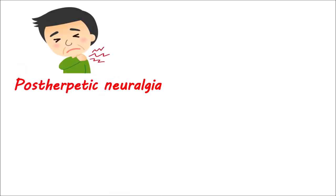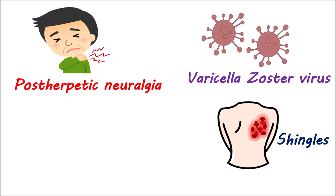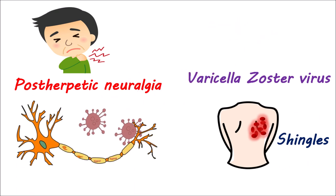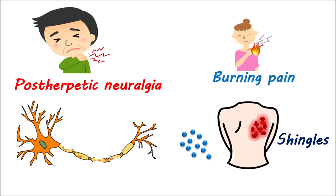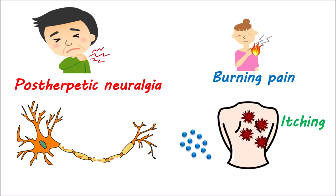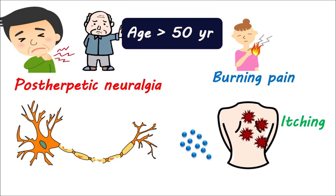Pregabalin is also indicated for the treatment of postherpetic neuralgia. Shingles caused by the varicella zoster virus produce damage to the neurons where they affect the skin region. This may result in burning pain that is sometimes sharp and jabbing. It may also result in a loss of sensation in that particular area, or it may even increase the itching sensation. Generally, neuralgia after herpes infection is more often observed in patients over 50 years old. In such conditions, pregabalin can be used to control neuronal pain.